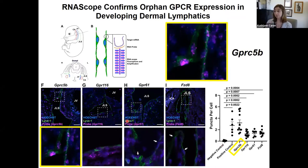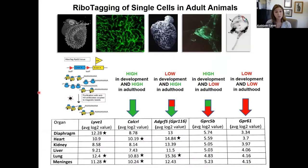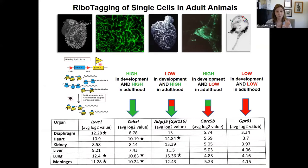We next asked whether expression of these receptors was conserved throughout development and into adult tissues, using a different methodology: ribotagging. Using CRE-based techniques to specifically express a ribotagging reporter within lymphatic endothelial cells, we can in different tissues pull out HA-tagged actively translating mRNAs, and after RNA-seq, obtain a list of the top enriched actively translating mRNAs within lymphatic endothelial cells in different tissues.